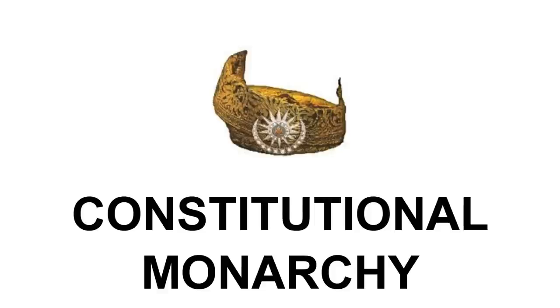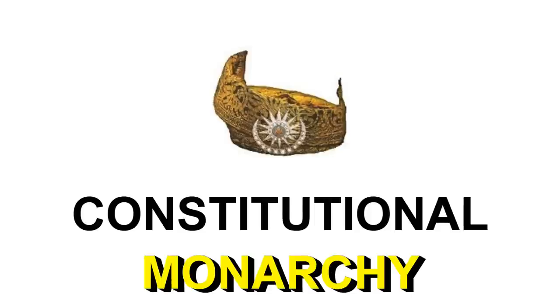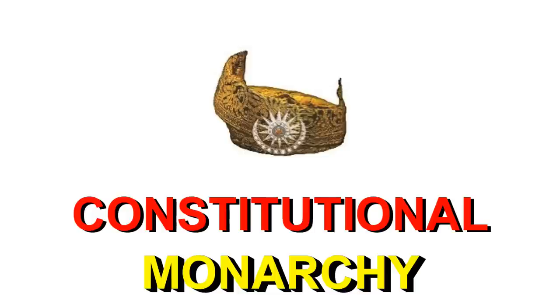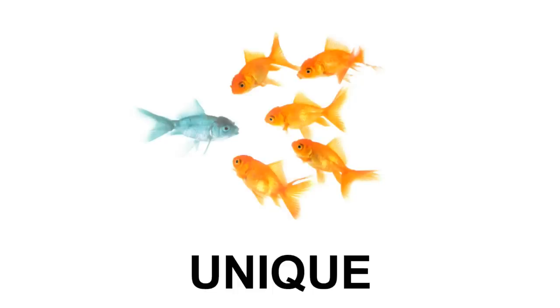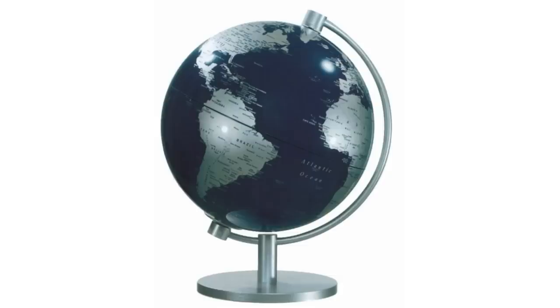The term constitutional monarchy obviously comes from two words: monarchy and constitution. In order for a government to be known as a constitutional monarchy, it must have a monarch or king. We have a king in Malaysia, and this is the unique feature of Malaysia. We have nine kings in Malaysia, and it's the only country in the world that has more than one king. Other countries either have one king or they don't have a king at all.